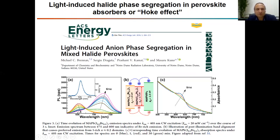How do we observe light-induced halide phase segregation in perovskites? The easiest way is to expose the perovskite film to light and follow the dynamics of the emission spectrum. The original emission band of the mixed halide perovskite rapidly shifts down under illumination, and a new band appears at longer wavelengths. This is due to the formation of bromide-rich and iodide-rich domains under illumination. Iodide-rich domains have a low bandgap and therefore emit at lower energies.